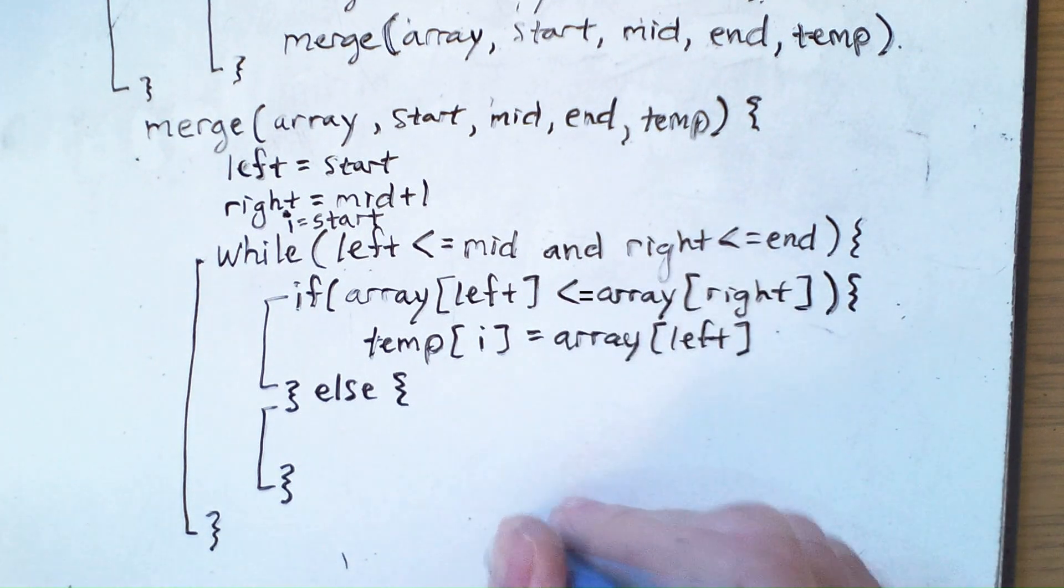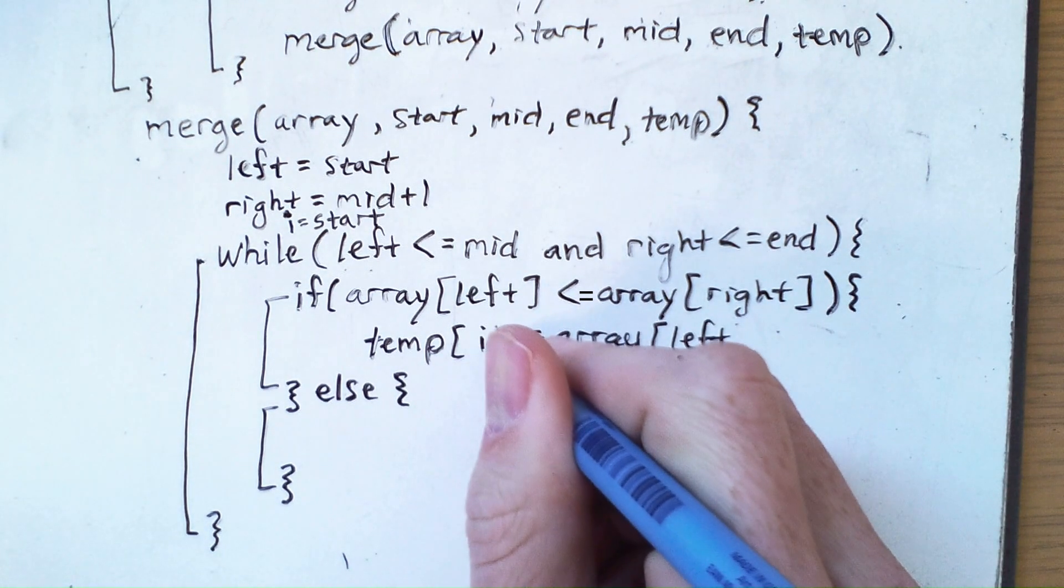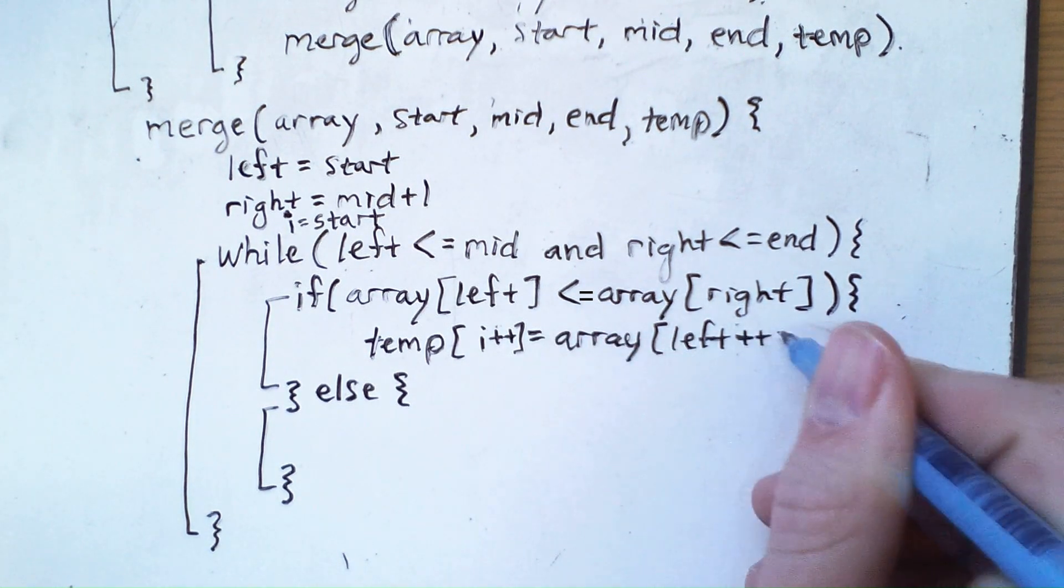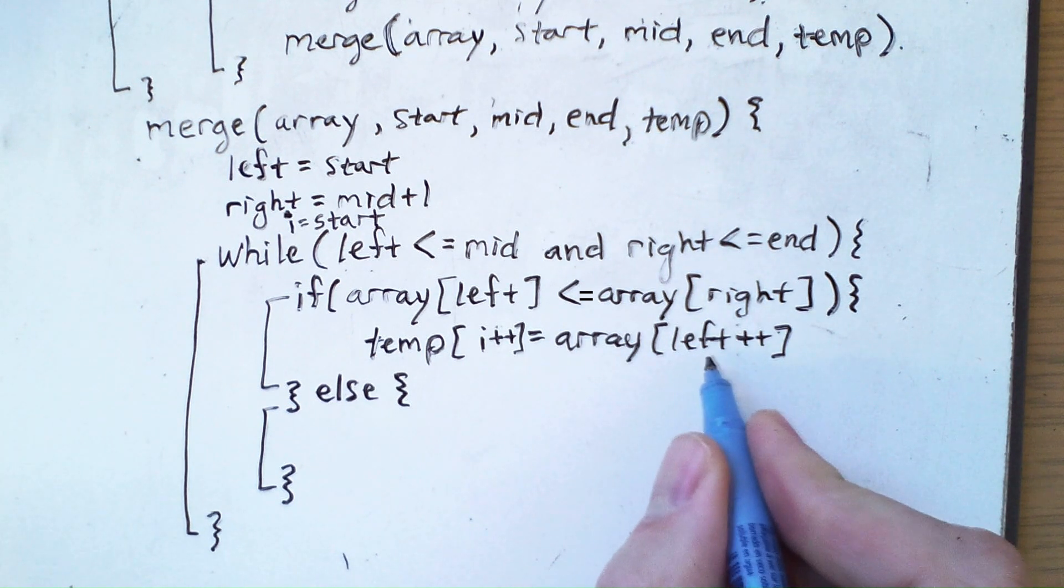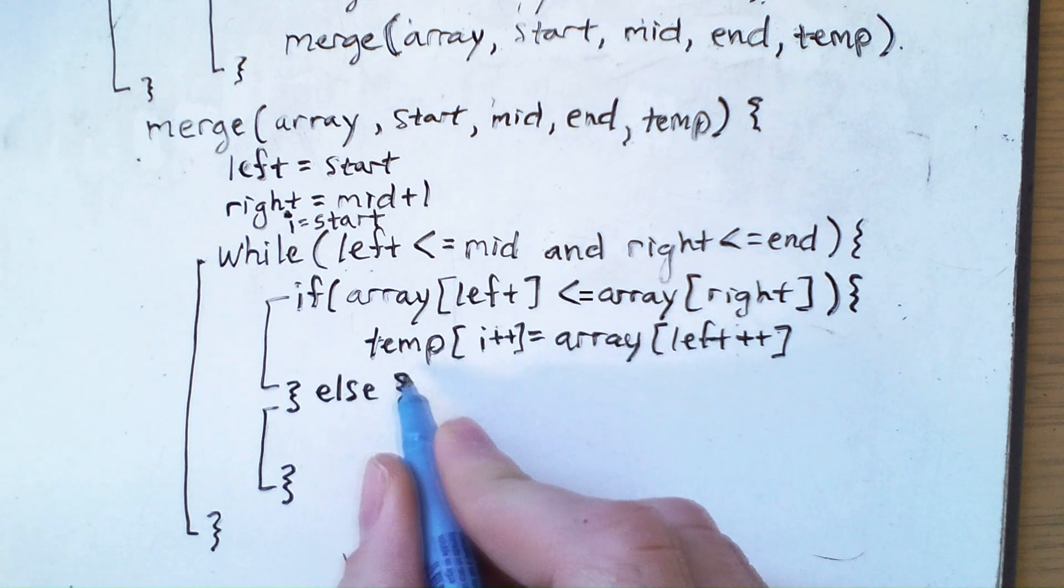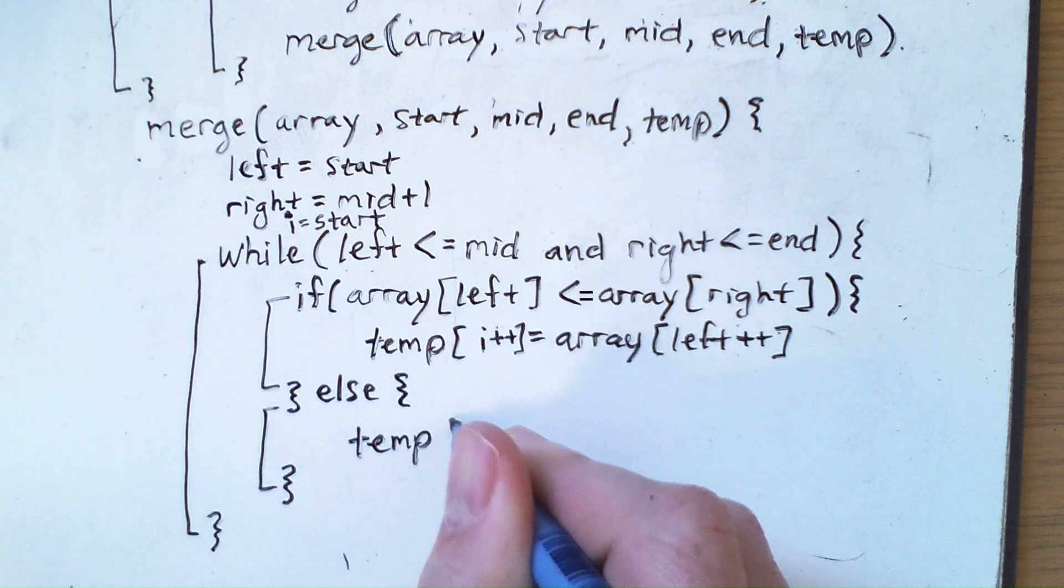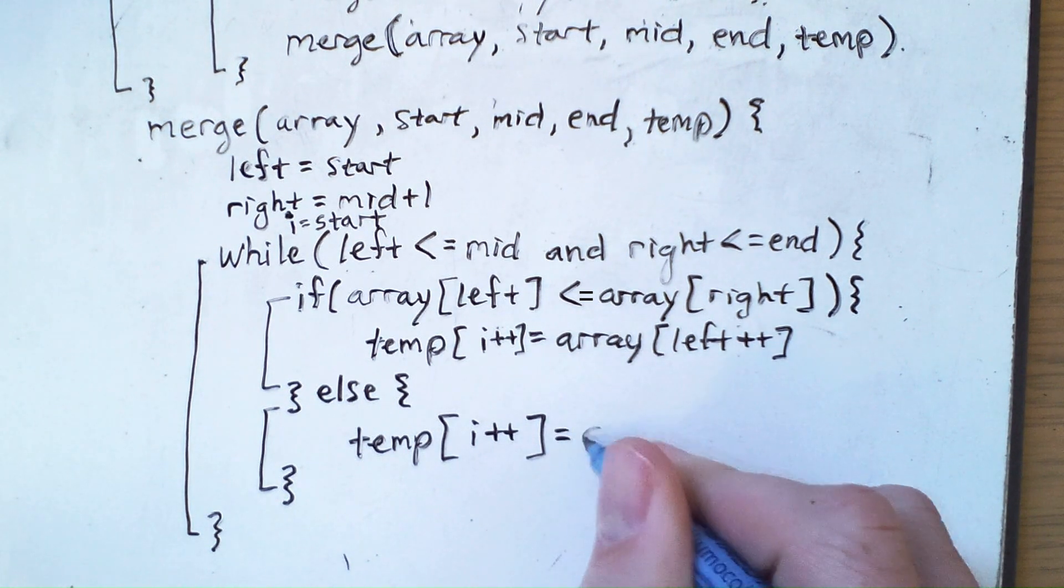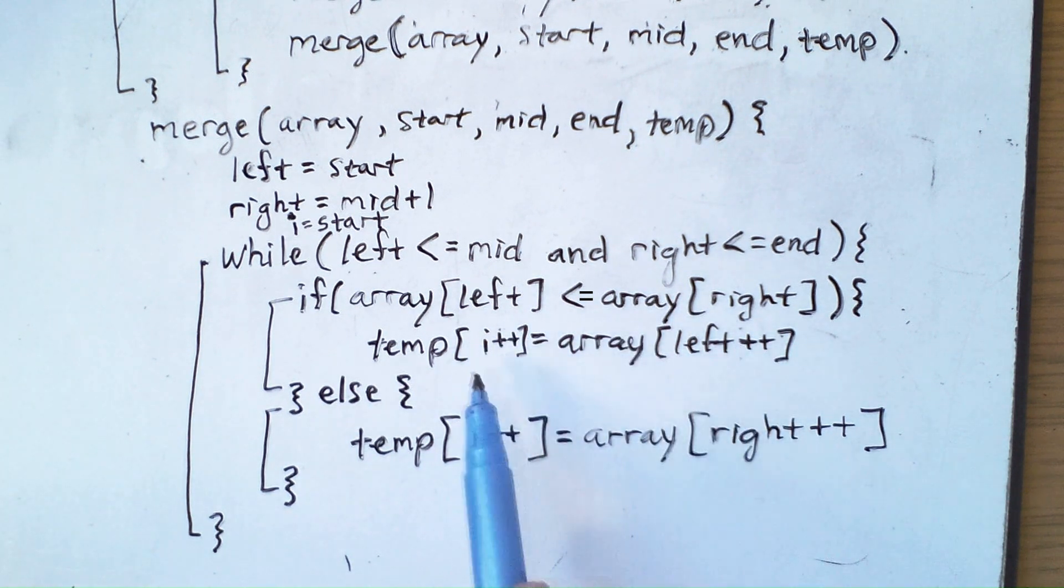Now, these increments could be separate commands, but I'm going to use the C, C++, Java syntax of a post increment to increment these variables. So those values are incremented after I assign the value from array index left to temp index i. And in this case, I will put a value into index i and then increase index i, but the value will come from array right. So I figure out the original value that was in the array, I put it into temp index i, and then I increment those values.